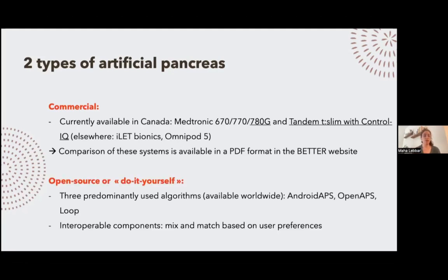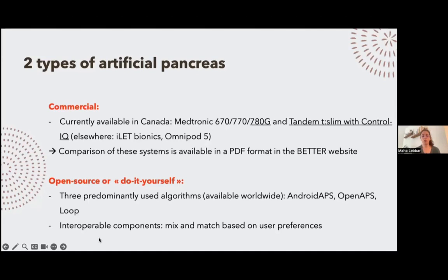The second family is the open source or do-it-yourself or DIY AP. Three are predominantly used worldwide, which is why it's called open source: Android APS, OpenAPS, and Loop. One thing that is really useful in those DIY APs is that they're interoperable, meaning you can mix and match between your preferred CGM with your preferred pump and associate it with your preferred algorithm — something that patients really like.